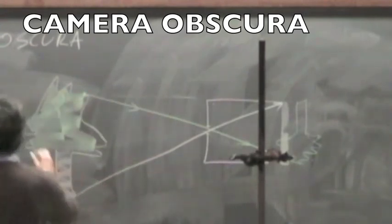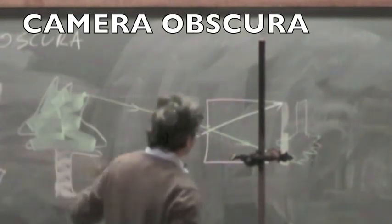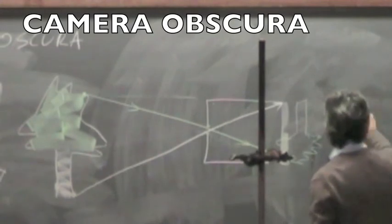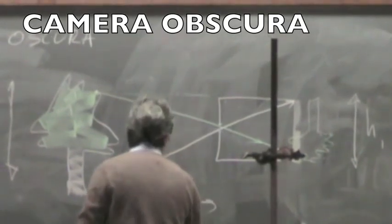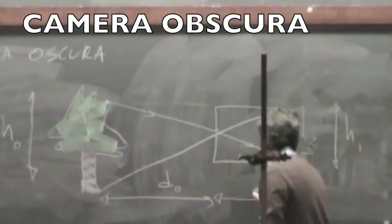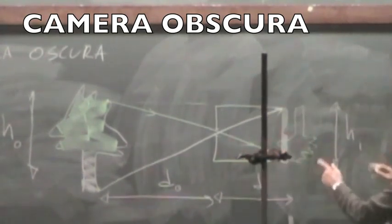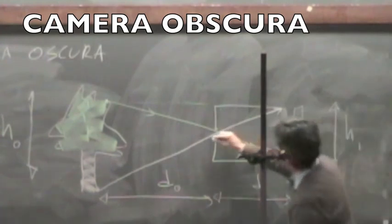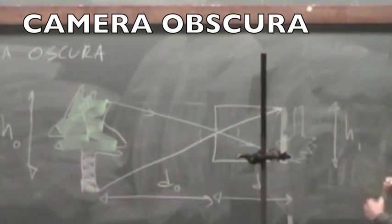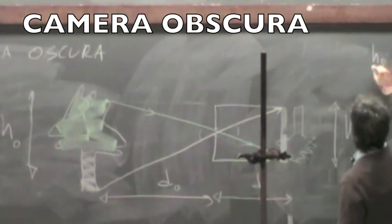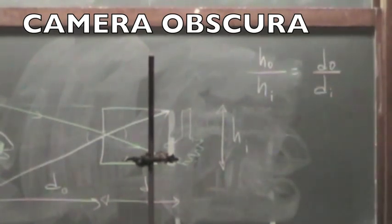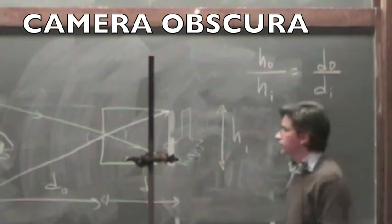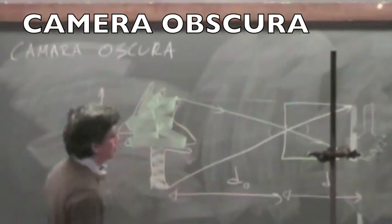If you do a little bit of geometry here, you will find out that if you call this the height of the tree—this is the object, so h₀ for object—and you call this hᵢ for image, then the distance to the object and the distance to the image from the front of the camera, those variables are related to each other. These triangles have the same angle, we share that angle. So that means that h₀ over hᵢ should be equal to d₀ over dᵢ. That tells you what the size of the image is going to be.